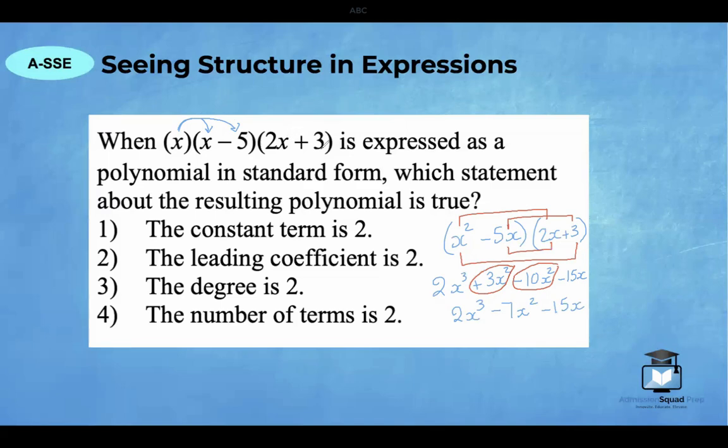So this is our final expression after multiplying x times (x minus 5) times (2x plus 3). Now we need to interpret what's going on. I noticed that this expression does not have a constant term. Recall that a constant term is a number that has no variable attached to it. Our final expression has no constant term. Therefore, answer choice 1 is incorrect. The degree of this polynomial is 3. Anytime we are looking for the degree of a polynomial, we're looking for the term with the biggest exponent. And that exponent will represent the degree of the polynomial. In this case, the degree is 3. So we also know that answer choice 3 is incorrect.